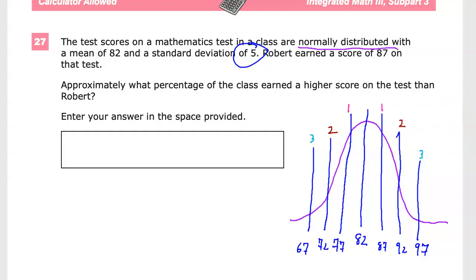Percentage-wise, the distance between this full section, one standard deviation away, is a significant portion of the overall set. The whole thing is about 68%, which would be 34 over here, and 34 over here.